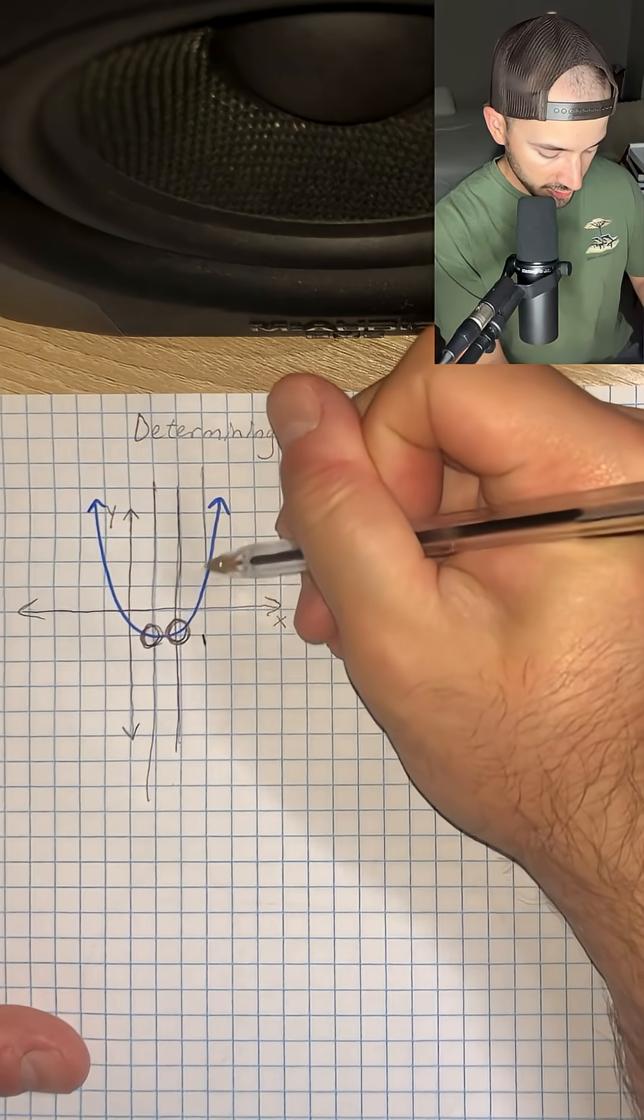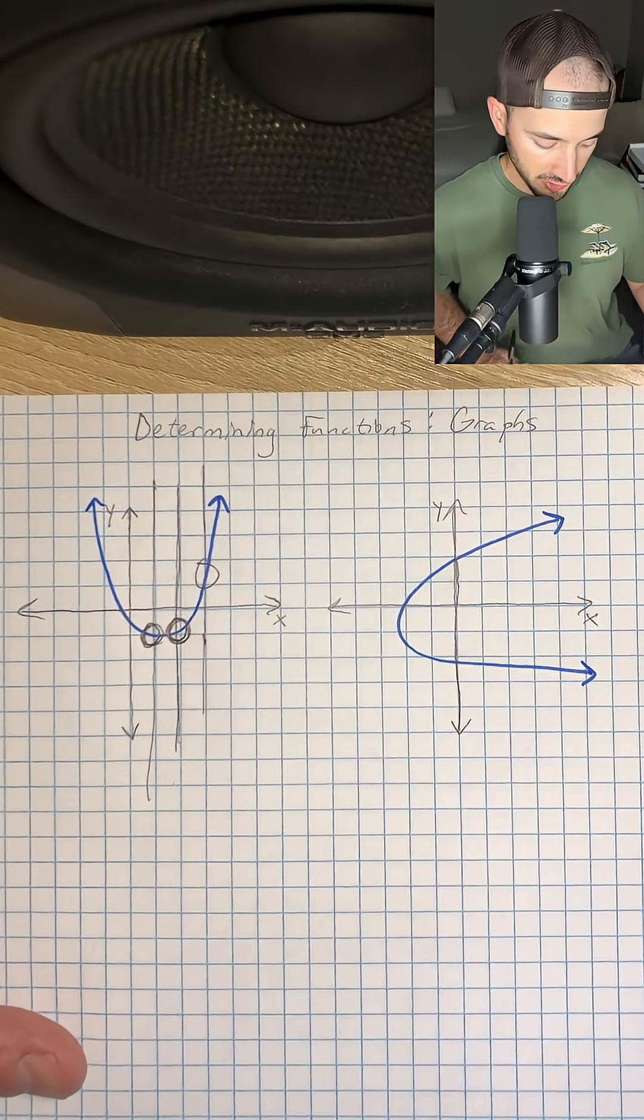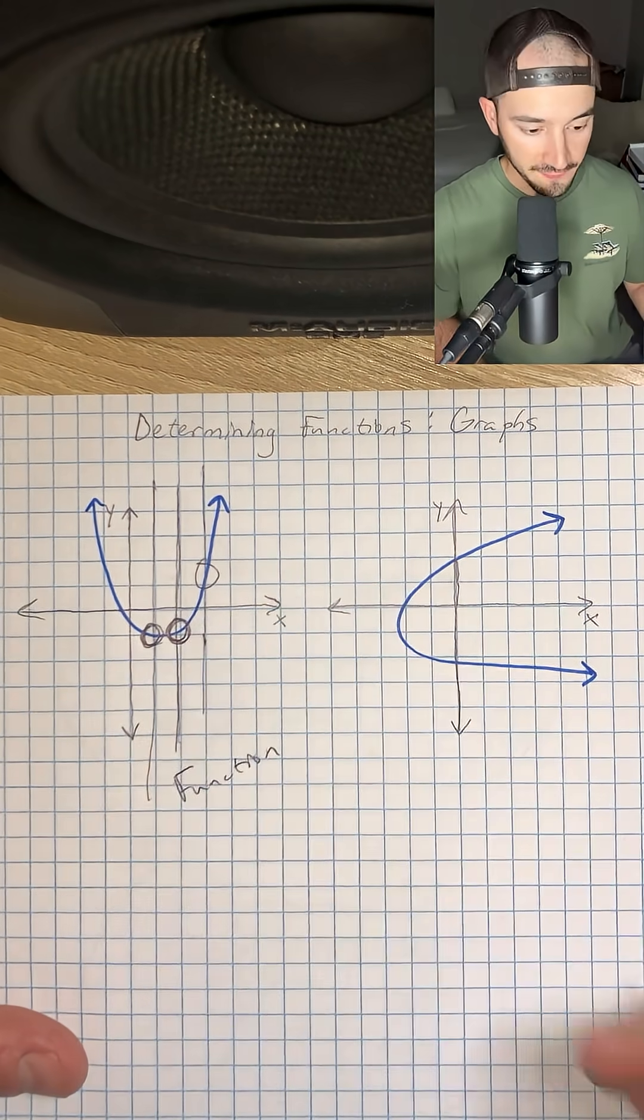Even if I draw it over here, we're still only crossing it once. So that graph is a function.